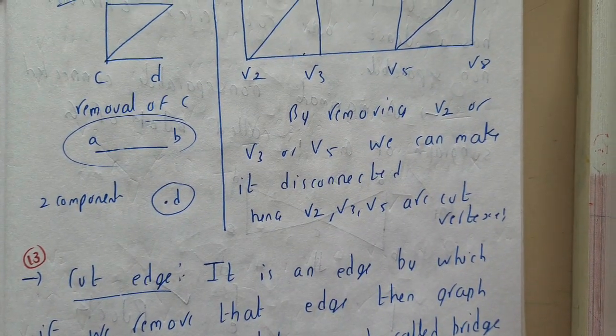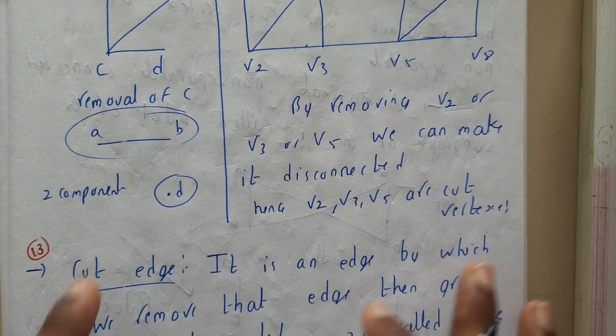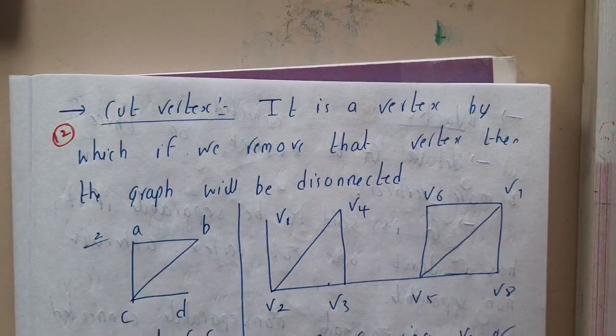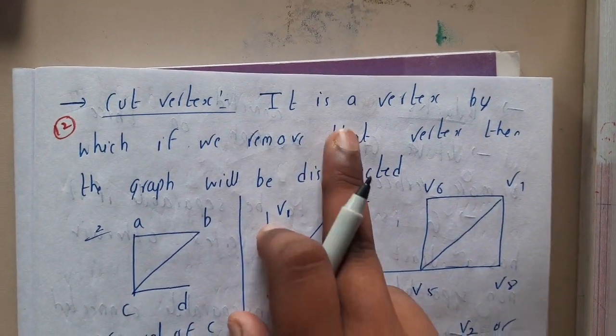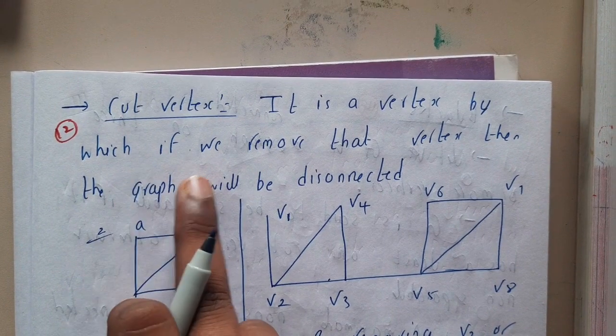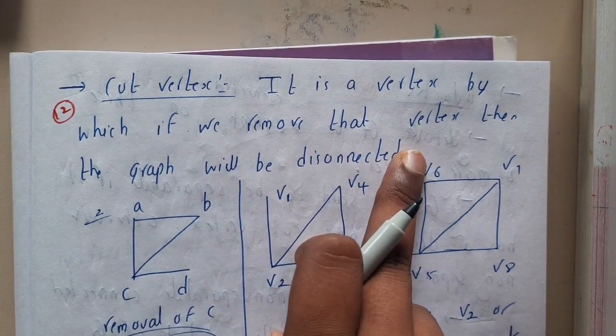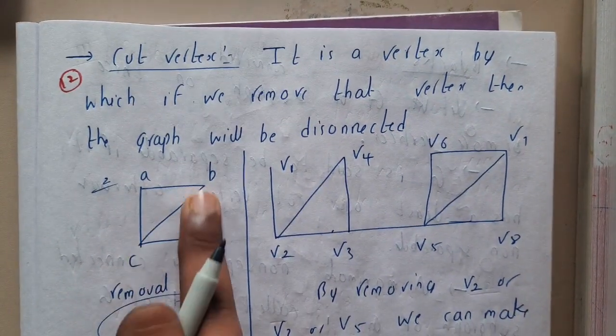Now let us go through the definition. Cut vertex: it is a vertex by which if we remove that vertex, the graph becomes disconnected. So here there is a graph. On removal of c, just give me a second.